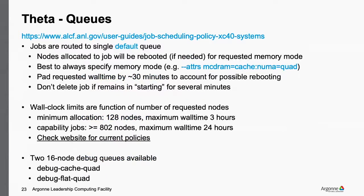Cobalt generates output files you can control with the '-O' prefix: a Cobalt log file with submission information (useful for debugging), and when the job actually runs, an error file and an output file containing standard error and standard output respectively. Keep these files — they contain important environment information when debugging issues.